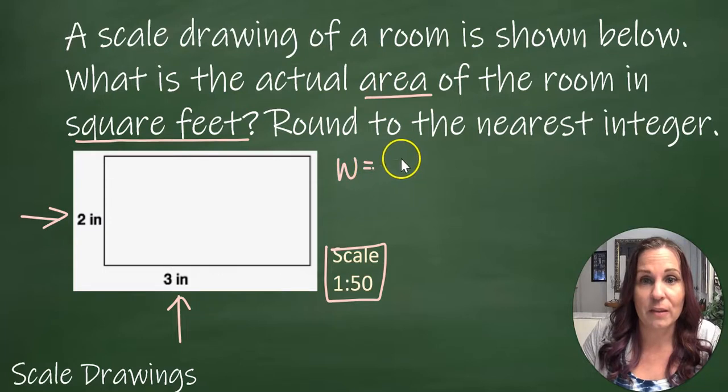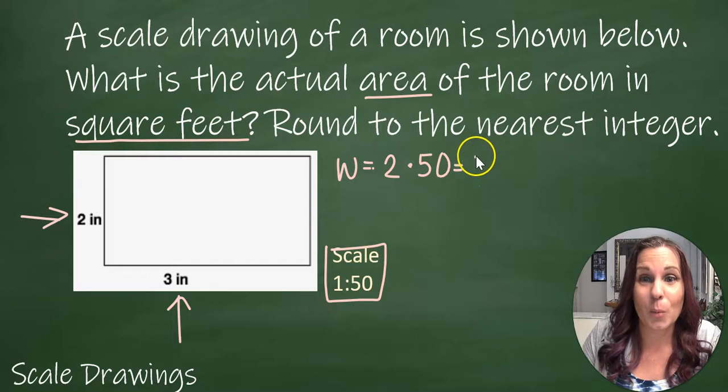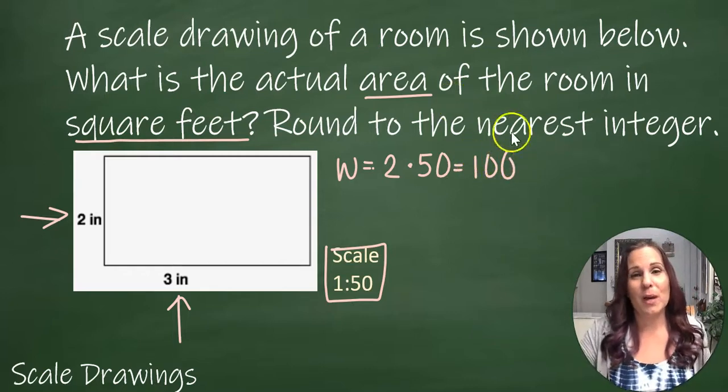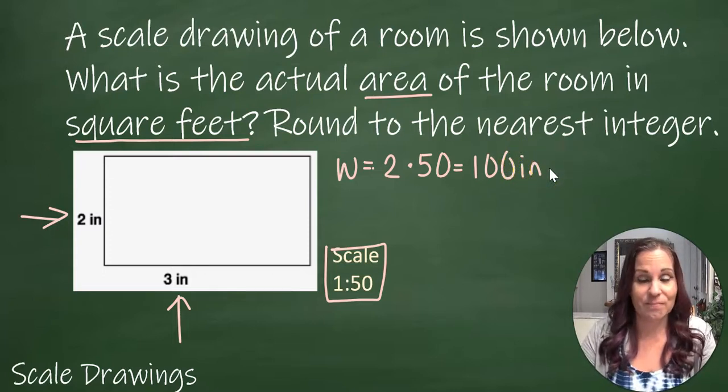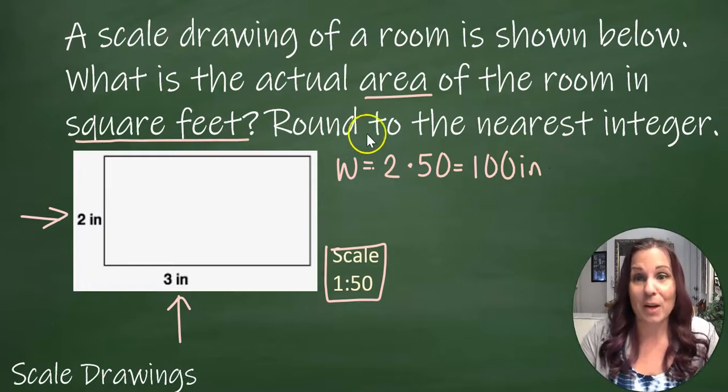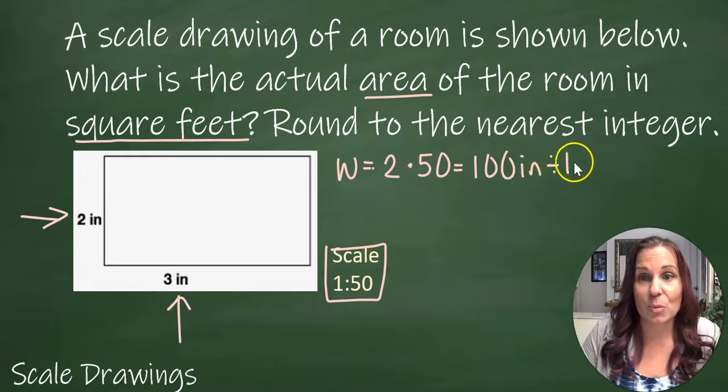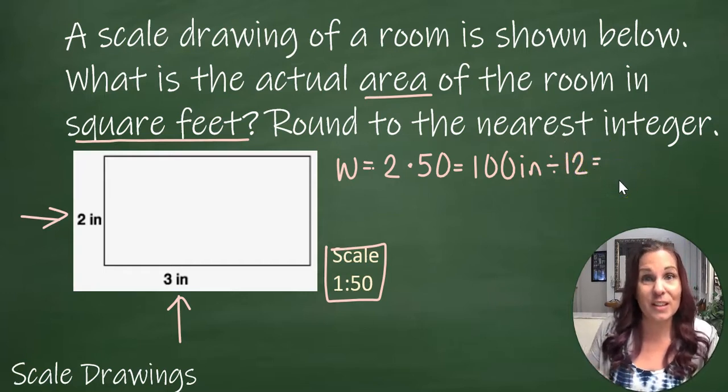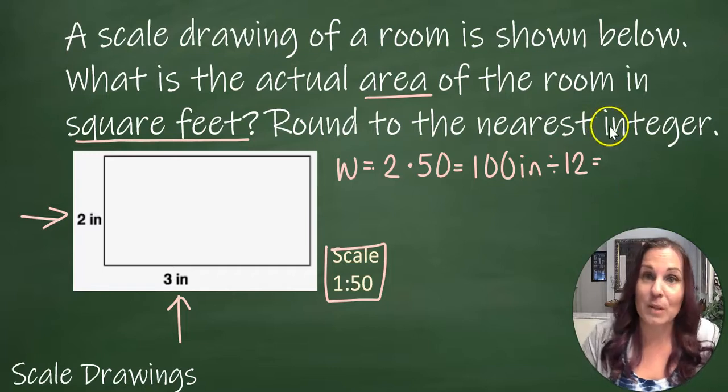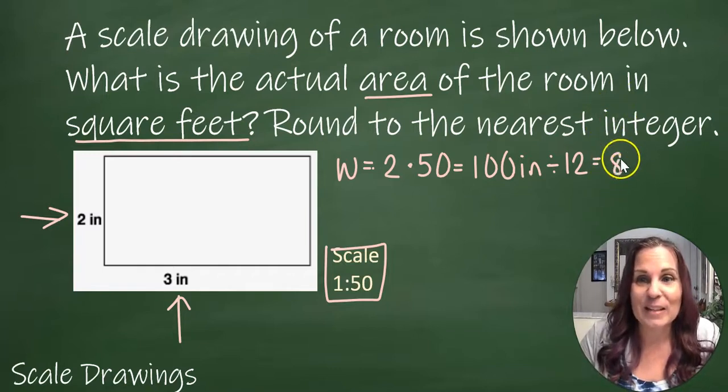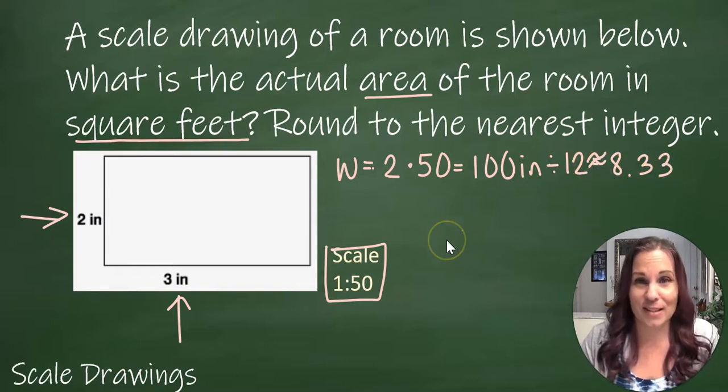For my width, my original width is 2, but when I multiply by 50 that gives me 100. Then how do I change 100 inches into feet? I divide by 12, because there's 12 inches in just one foot. I want to see how many times 12 goes into 100 to see how many feet there are in 100 inches. So 100 divided by 12 is 8.333... I'm going to round and make this squiggly because it's not an exact answer, it's an estimate.